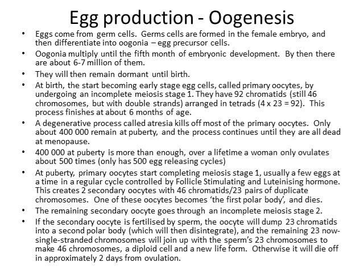Eggs come from germ cells or stem cells, which are formed in the female embryo and differentiate into oogonia or egg precursor cells. These oogonia multiply through mitosis until about the fifth month of embryo development, reaching about seven million, and then go dormant until birth.